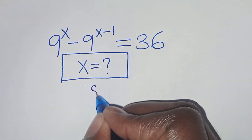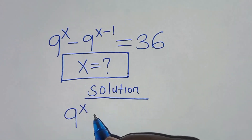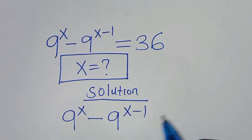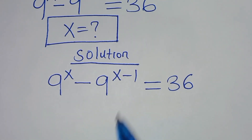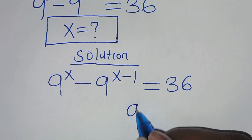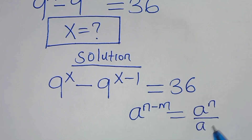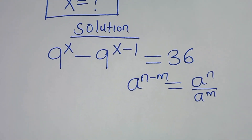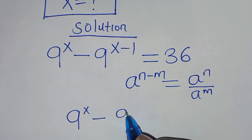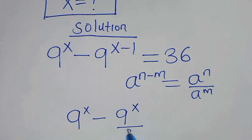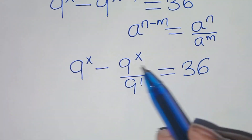Now let's provide the solution. We have 9 to the power of x minus 9 to the power of x minus 1, equal to 36. We have that 9 to the power of x minus 1 is in the form of a to the power of n minus m, which we can express as a to the power of n divided by a to the power of m. Applying this exponent property, we have 9 to the power of x minus 9 to the power of x divided by 9 to the power of 1, equal to 36.